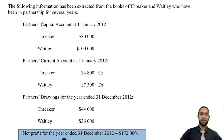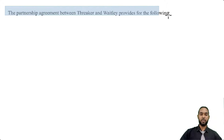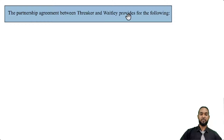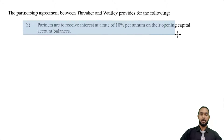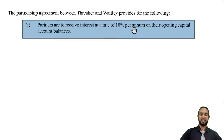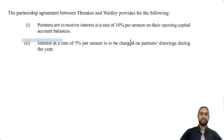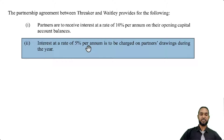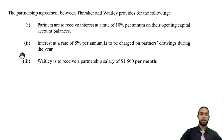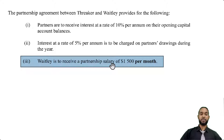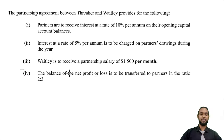They also tell us that the net profit for the year ended 31st December 2012 is $172,000. The partnership agreement between Threka and Waitly provides for the following: partners are to receive interest at a rate of 10% per annum on the opening capital account balances; interest at a rate of 5% per annum is to be charged on partners' drawings during the year; Waitly is to receive a partnership salary of $1,500 per month; and the balance of net profit or loss is to be transferred to the partners in the ratio two to three — that's the profit and loss sharing ratio.